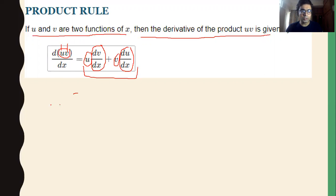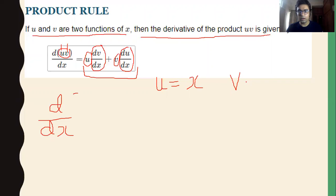Now let's understand a simple example. Suppose we have to differentiate d/dx of u = x and v = x². We have two different functions: the first function is x and the second function is x². We will put the value of u as x and the value of v as x².